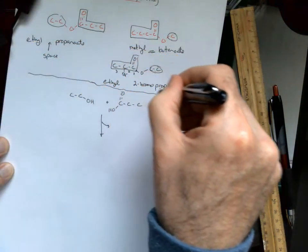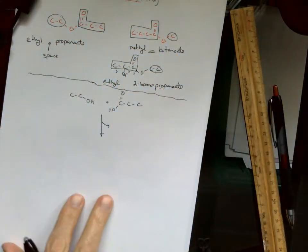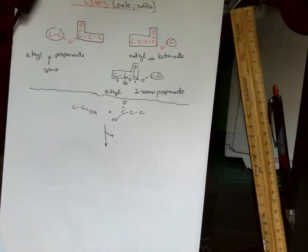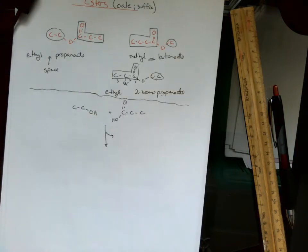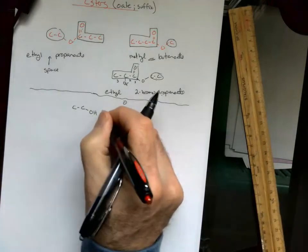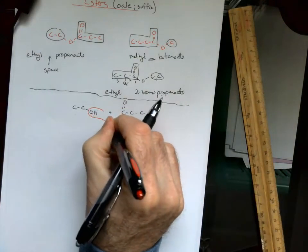little bit of a sidelight here, just as an explanation. You don't have to focus on this right now, you just have to know how to name and draw these things. The way we make these in the lab is we take an alcohol and a carboxylic acid, and they do something called a dehydration synthesis. So two hydrogens and